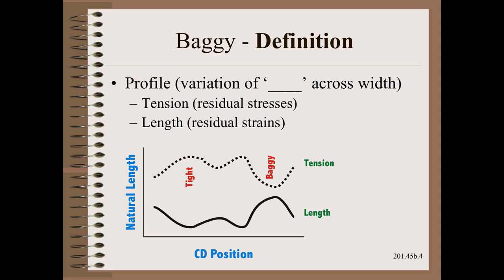Let us now talk about measurement. There are two equally valid definitions of bagginess, both involving profile — that is, a variation of something across the web's width. This something could be tension profile variation or length profile variation. People familiar with mechanics will recognize that we are looking at the world as either stresses or strains. While tension or stress is the most intuitive, length or strain may be the more useful, as we will see.